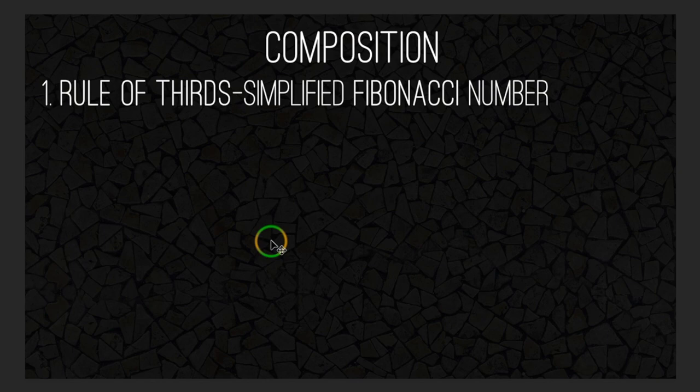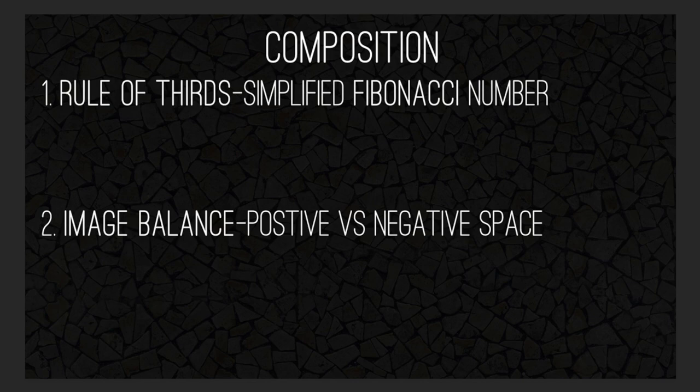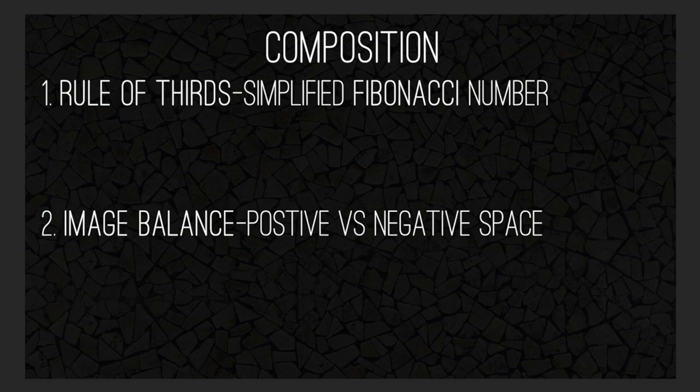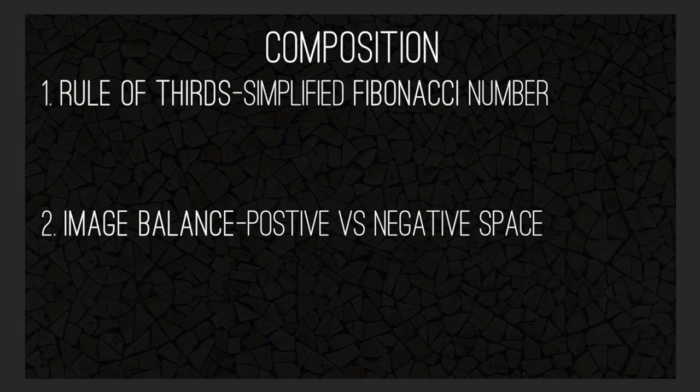Number one: rule of thirds, which is a simplified version of Fibonacci's number. If you have no idea what Fibonacci's number is, we're going to get into that just a little bit. Number two, we're going to have image balance — positive space versus negative space. And then number three, we're going to have image movement: how the eye moves through the image.